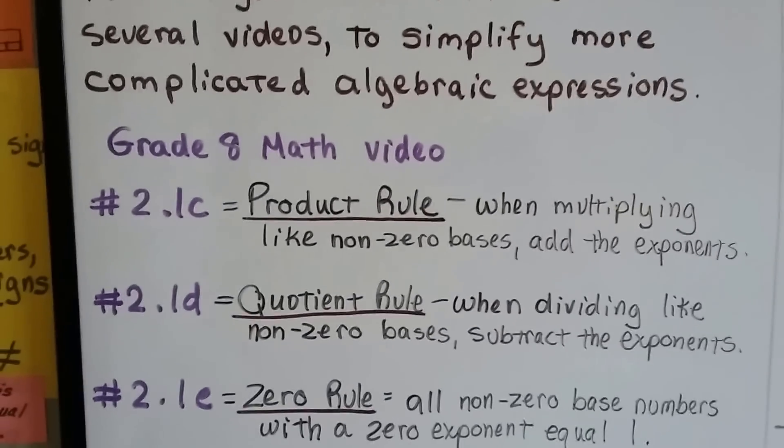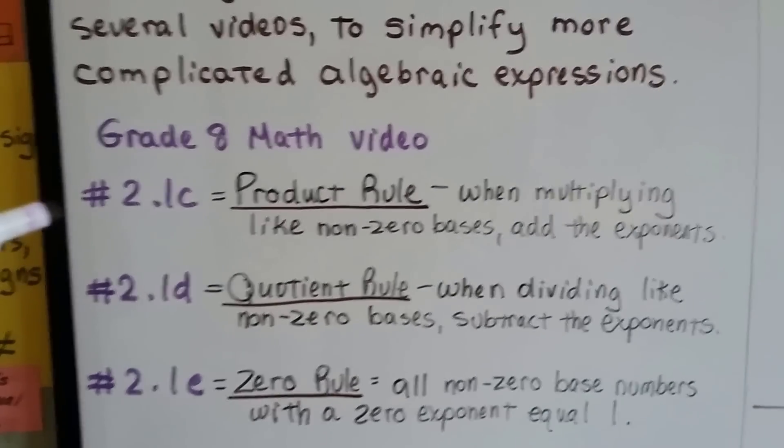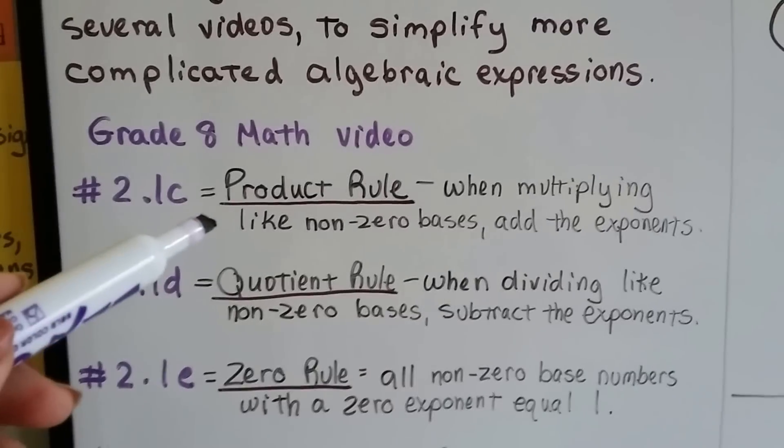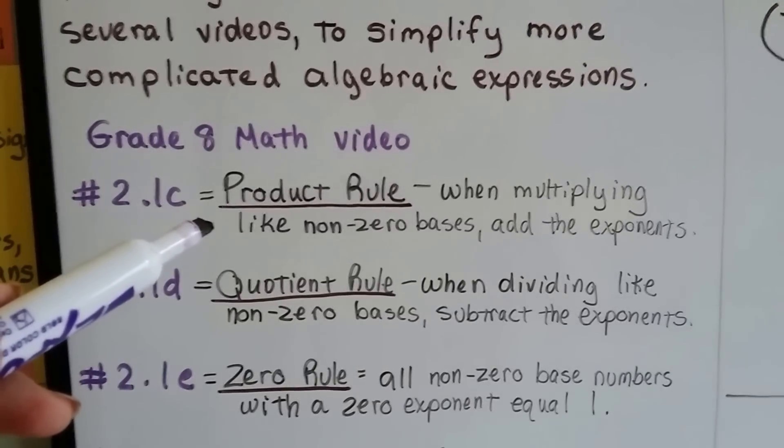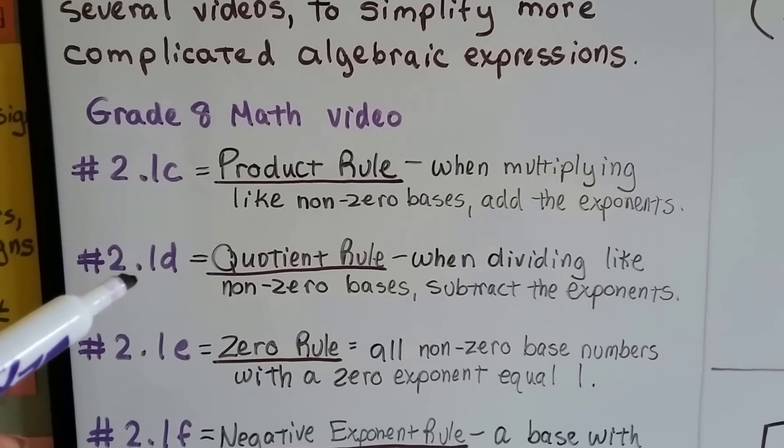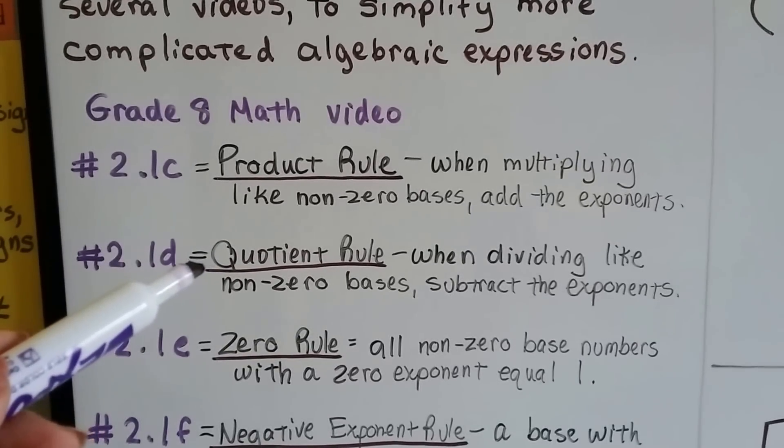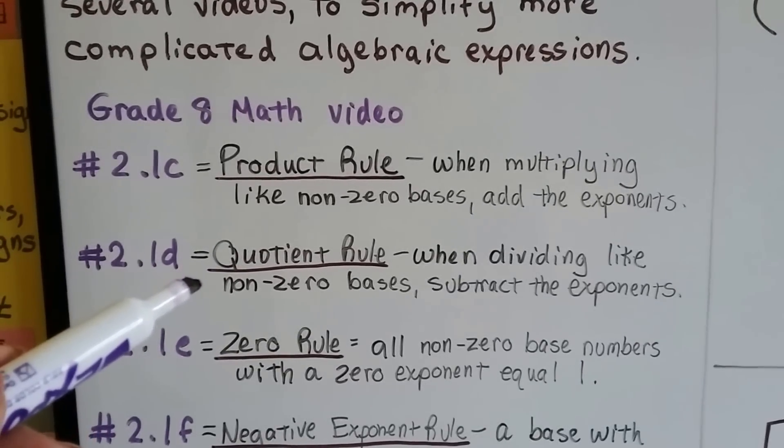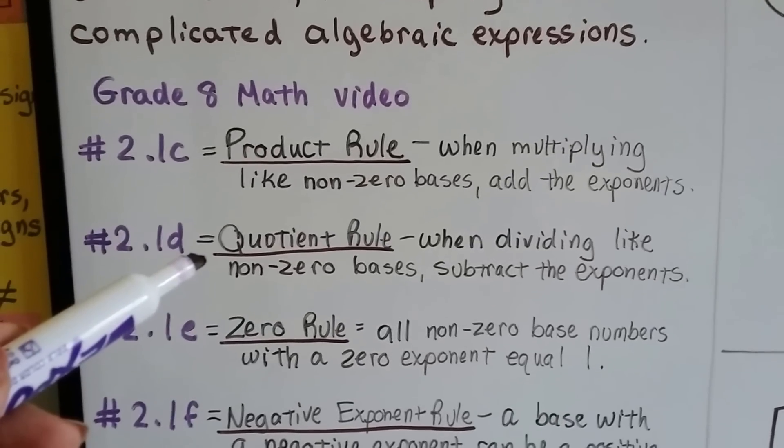So this is how it went. For the grade 8 math video number 2.1c, we did the product rule that says when multiplying like non-zero bases, we add the exponents. In 2.1d video, we did the quotient rule. It says when dividing like non-zero bases, we subtract the exponents.